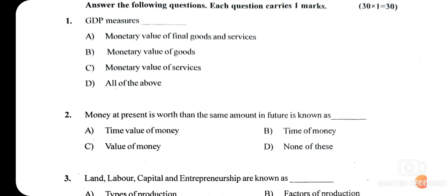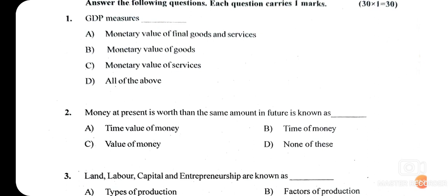The second question: money at present is worth more than the same amount in future — this is known as the Time Value of Money. The concept is simple: money available in the present is worth more than the same amount in the future. Therefore, option A — Time Value of Money — is the right answer.